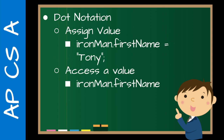Dot notation also allows us to assign a value: ironMan.firstName = "Tony" — this is Tony Stark. At this point you talk about public access and note that later we're going to change this to private, which we'll cover in a future unit. According to AP, public access is just not considered good object-oriented design. And then to access the value: System.out.println(ironMan.firstName).